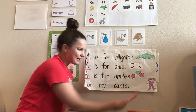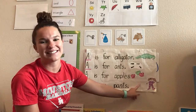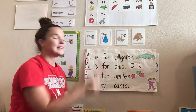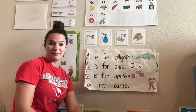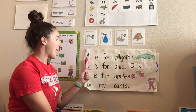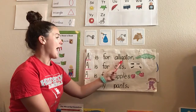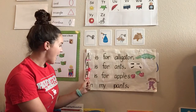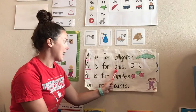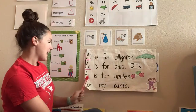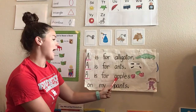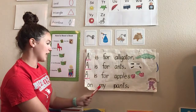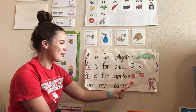apples on my pants. What? Oh my goodness, that's such a silly, silly poem. Let's read it one more time. Here we go. A is for ah, ah, alligator. A is for ah, ah, ants. A is for ah, ah, apples on my pants. What?